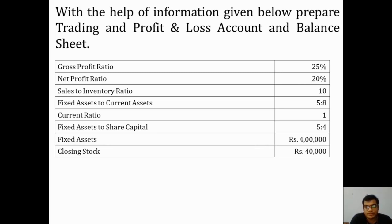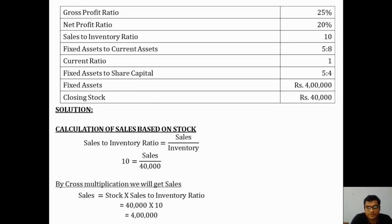For the sales to inventory ratio, inventory means stock and we have the value of stock, that is 40,000. So we start here. The formula is sales divided by inventory. Substituting: 10 = sales divided by 40,000. By cross multiplication, sales equals stock into the sales to inventory ratio, that is 40,000 into 10, which gives us sales of 4 lakhs.